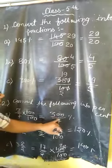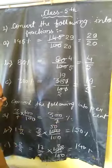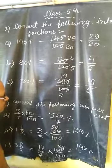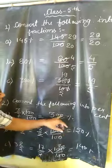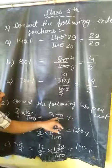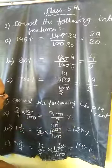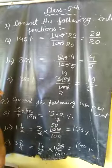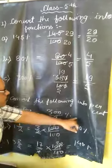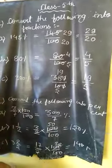It will be 300 upon 7 percent. In other ways, we can divide 300 by 7 and express the percent in decimal.